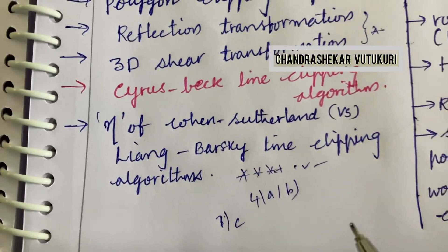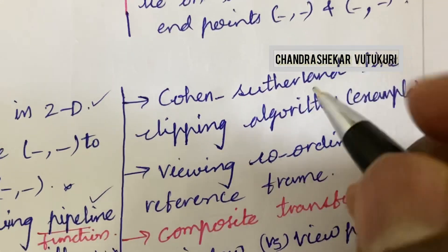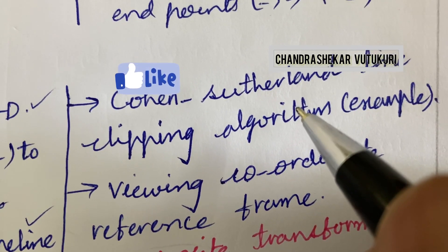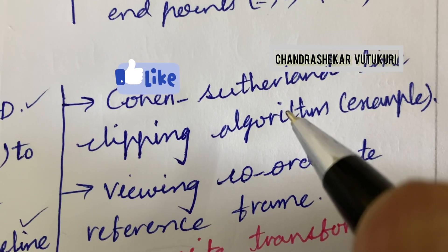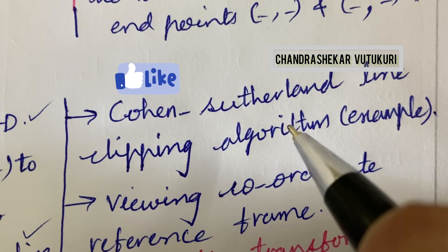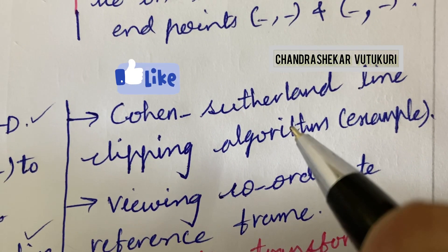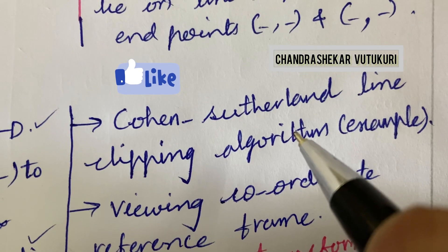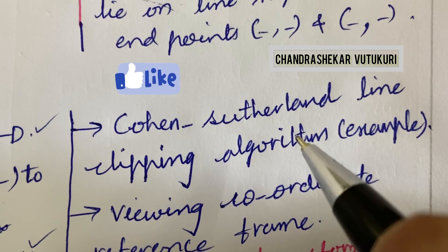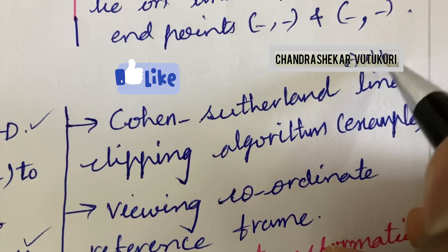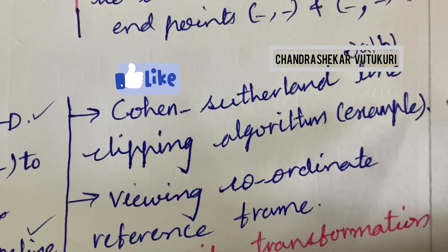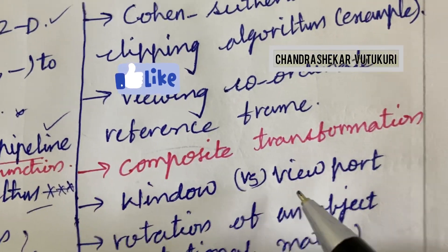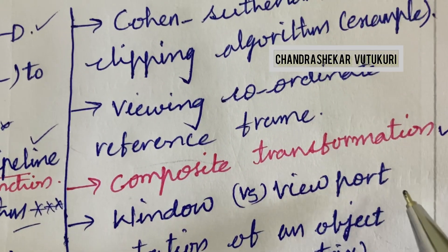I am going to let my subscribers and members know which units to prepare in order to score full marks. If you haven't subscribed or taken membership, please do it immediately. I will cover R22 as well as R18 regulation important questions as per the question paper pattern of Part A and Part B. The paper pattern is a bit difficult this time — you are supposed to cover each and every part I am highlighting. The next topmost question is 5A and 5B: Cohen-Sutherland line clipping algorithm — this is going to come for sure. Viewing coordinate reference frame and composite transformation — short question. Window versus viewport — short question.